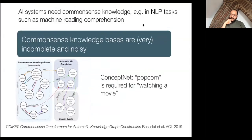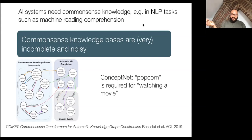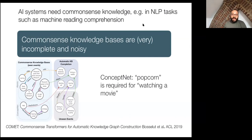Common sense knowledge bases are also much noisier than domain-specific knowledge bases. For example, in ConceptNet, we have the concept that popcorn is required for watching a movie, which is false. Examples like this are common in these knowledge bases, simply because it's very hard to know exactly what knowledge to include — common sense knowledge is highly context-dependent and vague by nature.